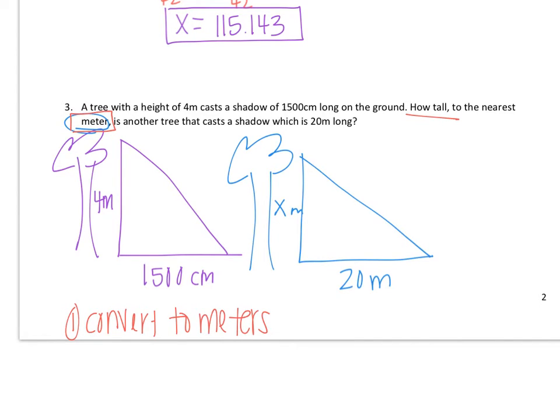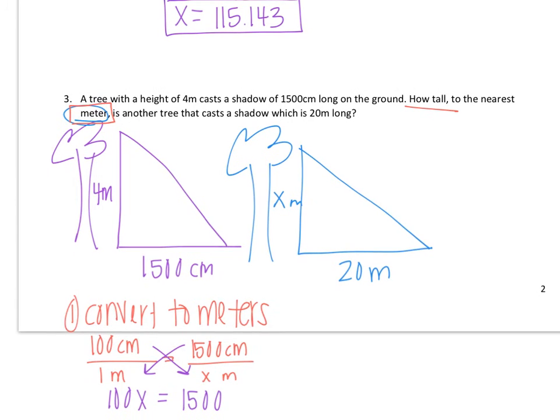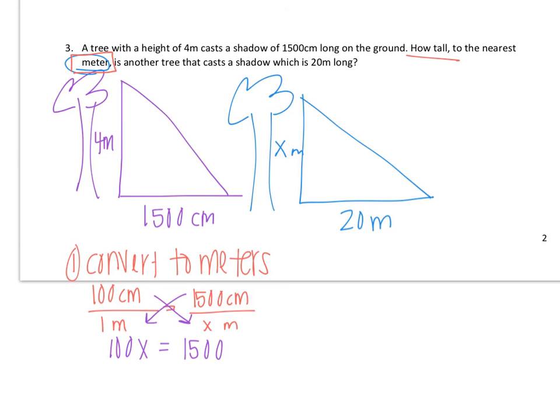So in order to convert to meters, like I said earlier, I like to do proportions. Something like 100 centimeters for every 1 meter equals 1,500 centimeters for every x meters. And all we do is just cross multiply. So here we have 100x equals 1,500. Then I'm dividing by 100. And we get x equals 15. Now that's not the x that we were solving for. That's just replacing this 1,500 centimeters with 15 meters.